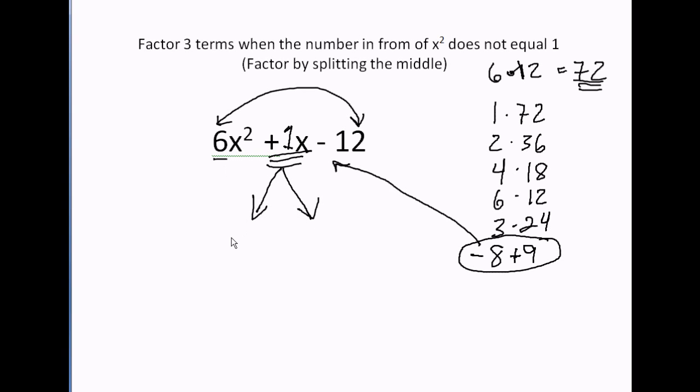A minus 8 and a plus 9 give me a plus 1. So then we split the middle with that. 1x is the middle, but we're going to call it a negative 8x and a positive 9x. This is still 1x. It's just split up. I bring down the minus 12.